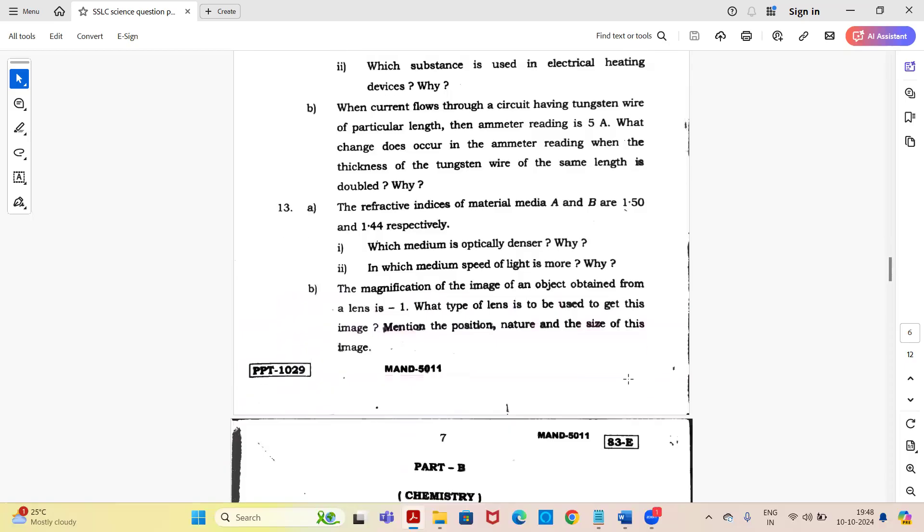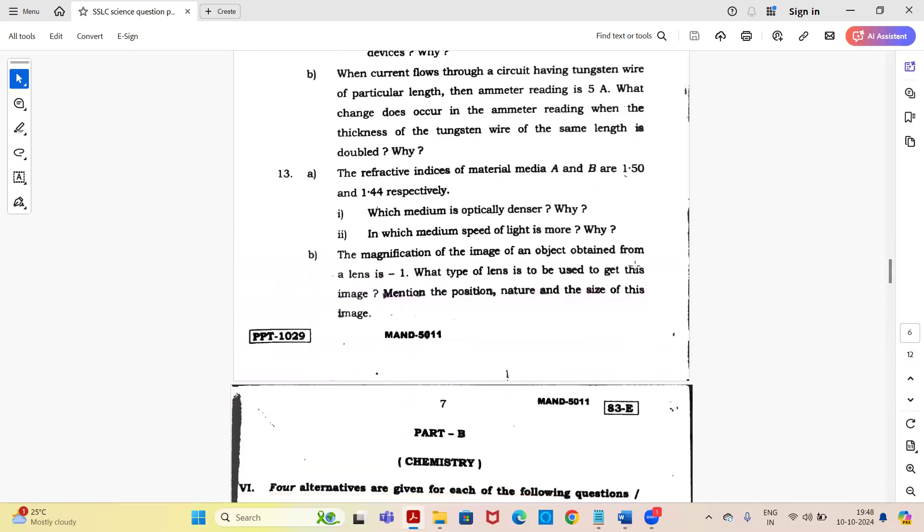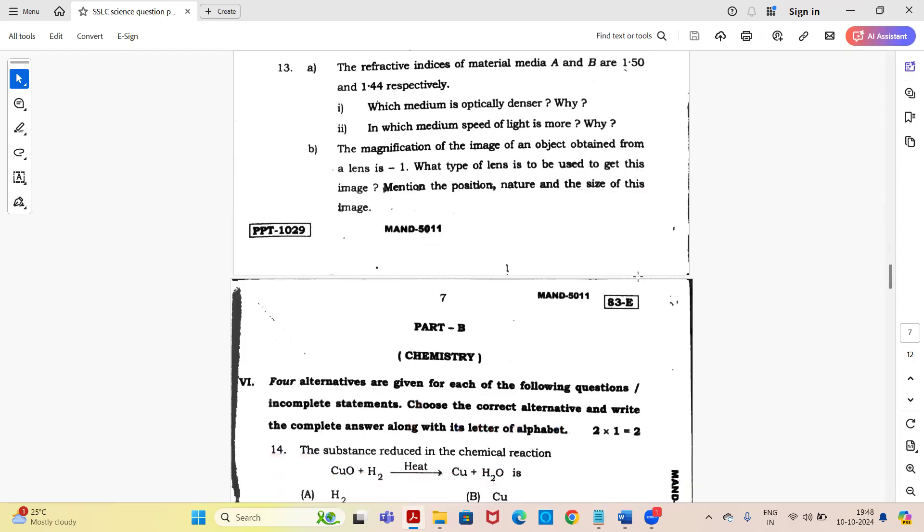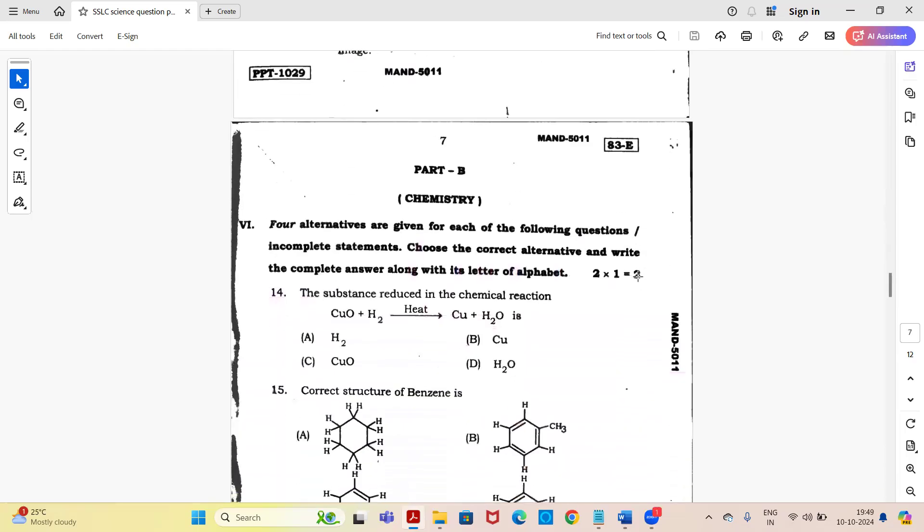Question 13: the refractive indices of material media A and B are 1.50 and 1.44 respectively. Which medium is optically denser, why? In which medium is speed of light more, why? Sub question B: the magnification of the image of an object obtained from the lens is minus 1. What type of lens is to be used to get this image? Mention the position, nature and size of this image. These were 13 questions from your physics part. Now Part B chemistry starts.